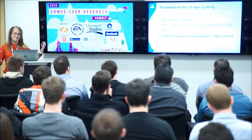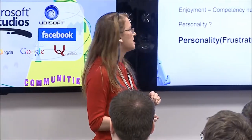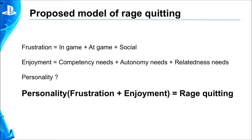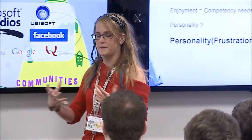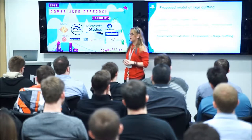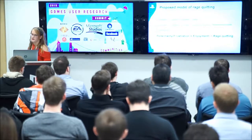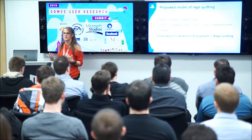I'm thinking of a model of rage quitting that incorporates frustration — in-game, at-game, and social — as well as enjoyment. If a game meets a player's competency needs, their relatedness needs through social interaction, and their autonomy needs — am I making my own decisions, am I being self-sufficient? — then frustration, enjoyment, and personality all factor in. The ultimate goal is to mathematically model and predict when a game is more or less likely to inspire rage quitting.